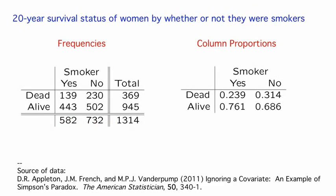Let's look at one more example, from a report on a 20-year follow-up of a large-scale study of thyroid and heart disease carried out in England in the mid-1970s. The data contain measurements on 1,314 women classified at the start of the study as current smokers or never-smokers, and we're interested in their 20-year survival status. Looking at the contingency table, the column proportions tell an interesting story: of the smokers, only 24% had died, but of the non-smokers, 31% had died. Does this show that smoking might lead to a greater chance of surviving 20 years? Of course, there's a twist.